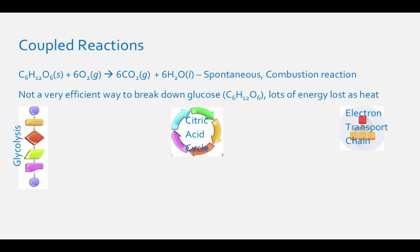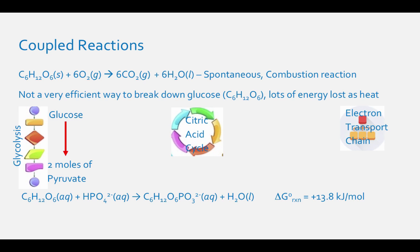In glycolysis, each mole of glucose is broken down into two moles of pyruvate. An early step in this process is addition of phosphate to glucose to produce glucose 6-phosphate. This reaction is not spontaneous because it has a delta-G-0 reaction of positive 13.8 kilojoules per mole.